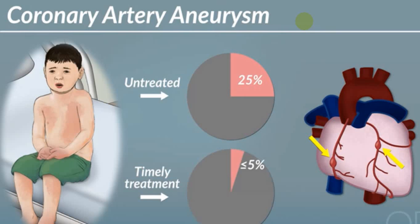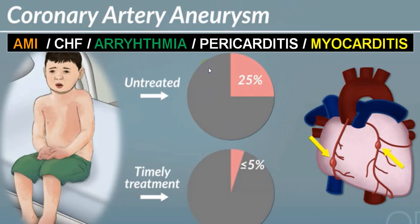Coronary artery involvement is very common — almost 25% of untreated patients. If treated timely, the complication of coronary artery aneurysm reduces to less than 5%, but if untreated it will be more than 25%. Secondary to that, the person has a very high chance of developing acute MI, congestive heart failure, arrhythmia, pericarditis, and myocarditis. There is also a very high chance of coronary artery aneurysm rupture and death.